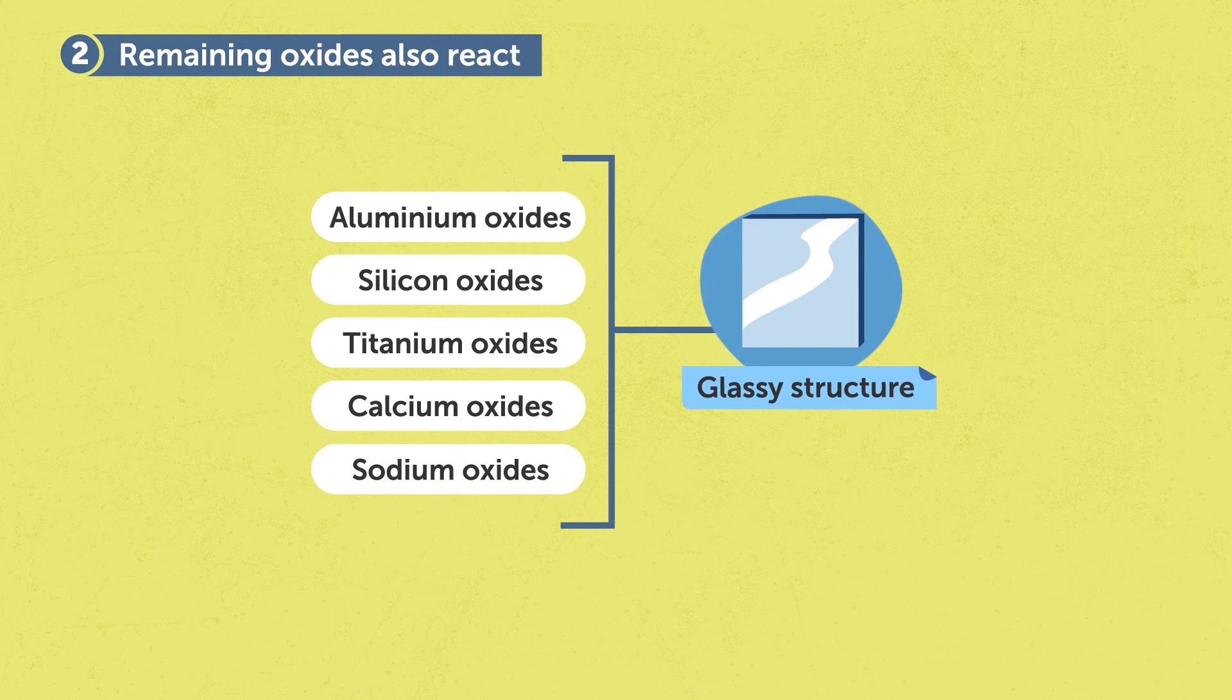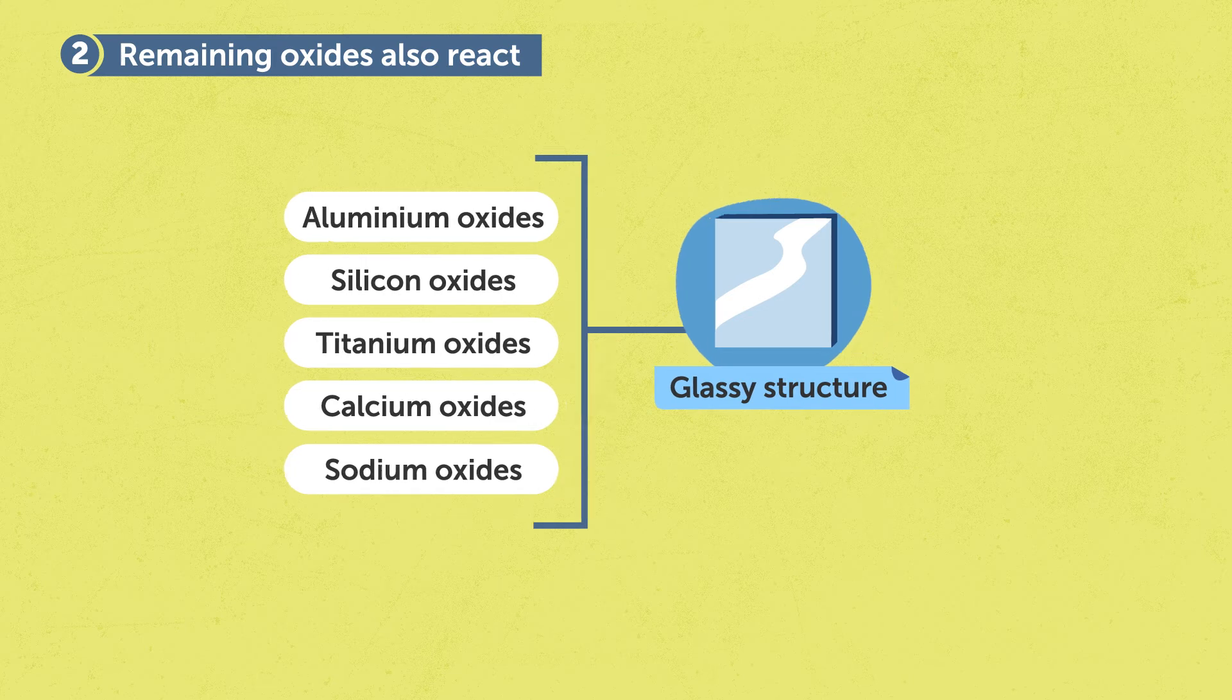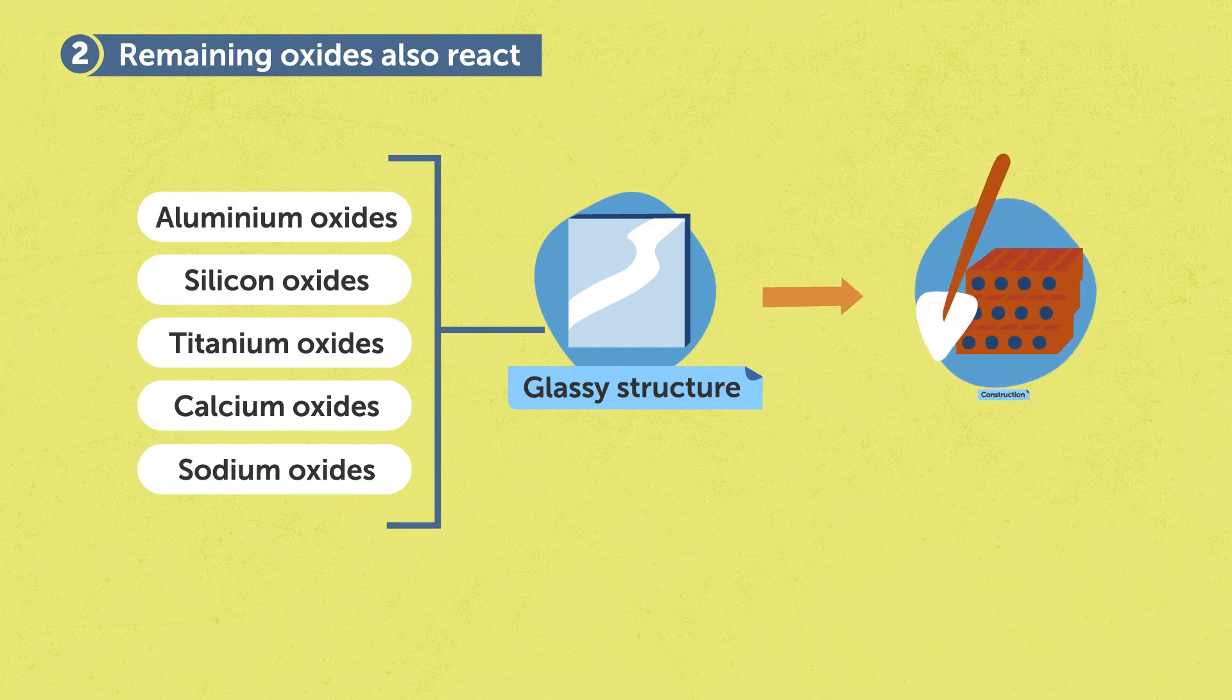This subproduct has a neutral character which is pretty much different from the very aggressive alkaline red mud and opens new possibilities for using this subproduct in constructions, for example.